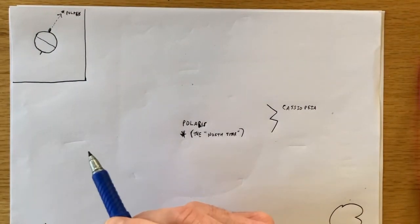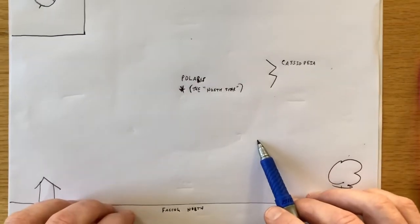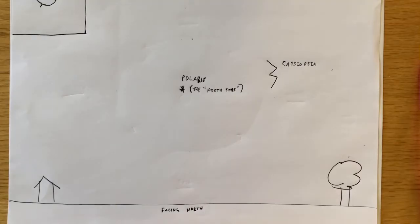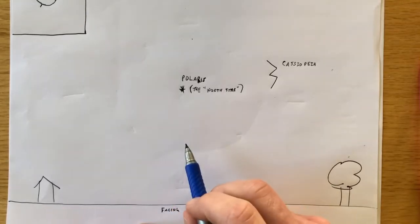So Polaris, we often call the North Star, because it's pretty much due north. Now we're going to look down here to my little landscape. This is facing north. So this is a horizon. Here we got a house. We got a nice little tree. And when I look in the northern sky, what do I see? I see Polaris, the North Star.